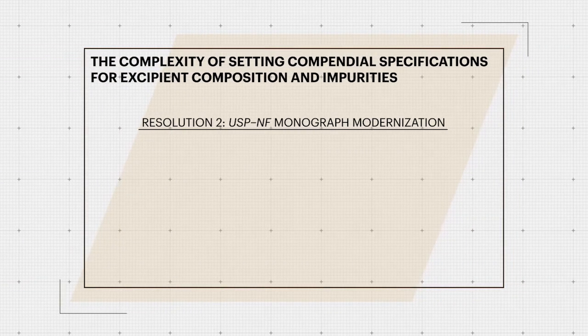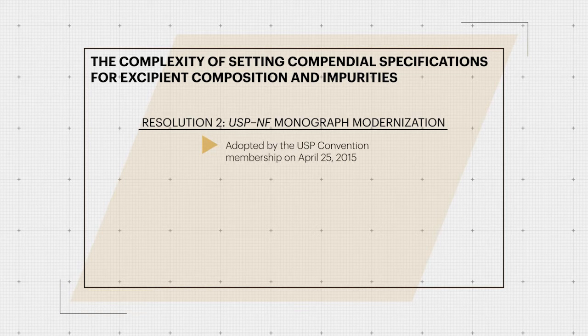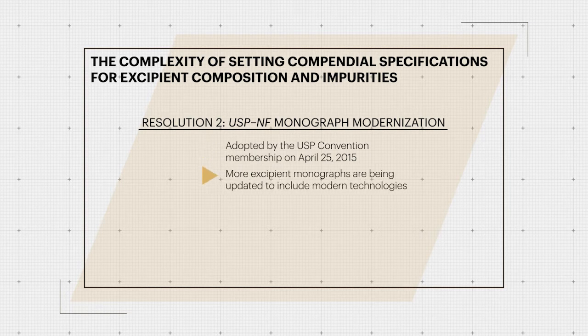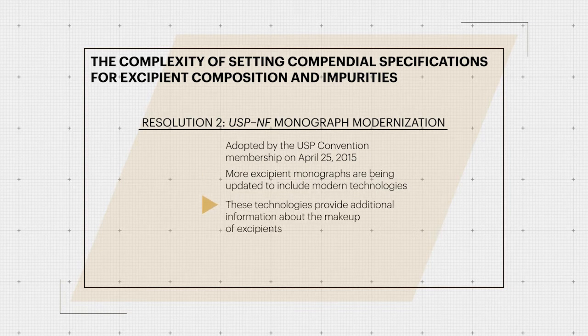As USP makes progress in working towards Resolution II of Monograph Modernization, adopted by the USP Convention membership on April 25, 2015, more Excipient Monographs are being updated to include modern technologies that can help reveal Excipient Composition. These technologies provide additional information about the makeup of the Excipients and a further understanding of the complexity of the materials utilized in the formulation of drug products.